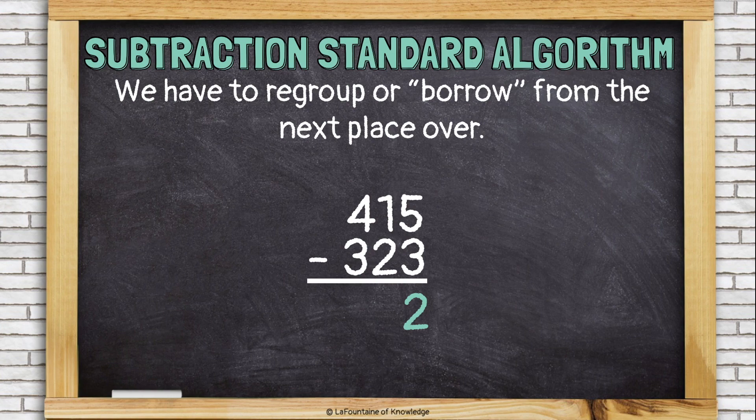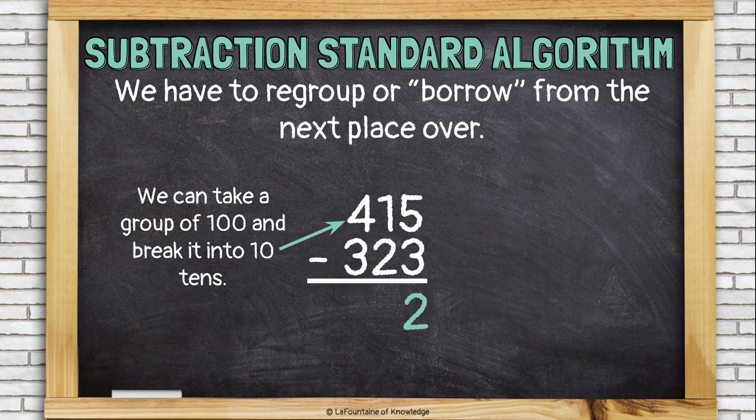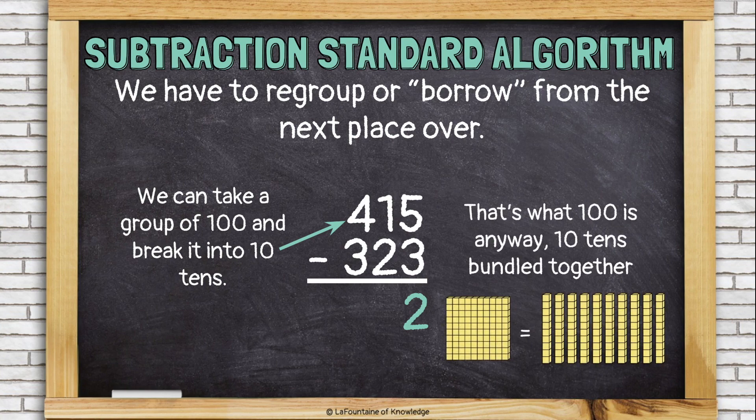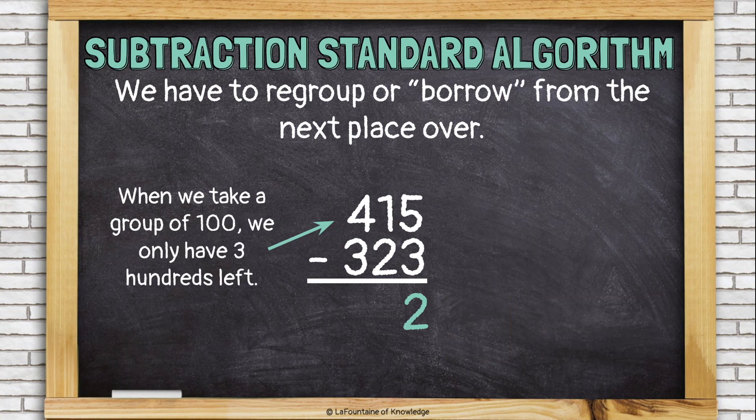So, I have to regroup or borrow from the next place over. I'll show you how it works. We can take a group of 100 and break it into ten tens. That's what a hundred is. It's ten tens bundled together.